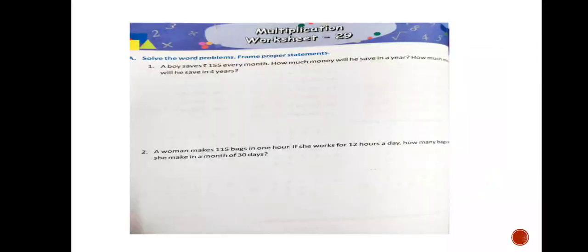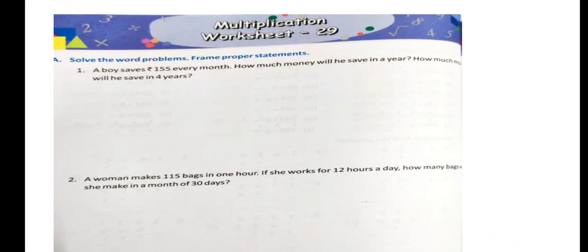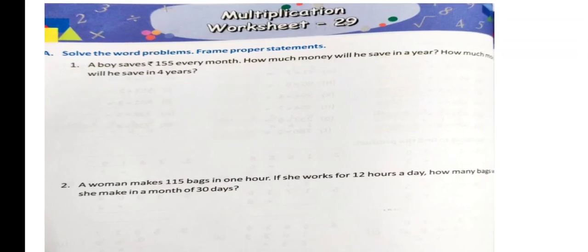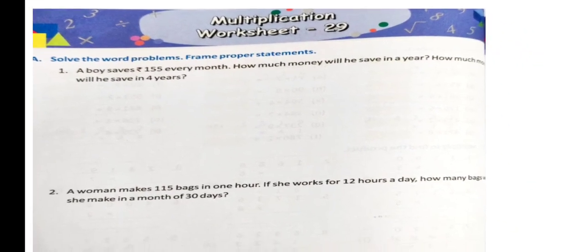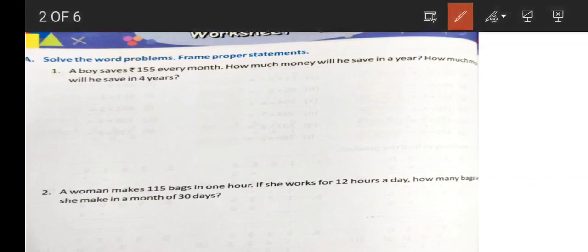Problem 29: A boy saves rupees 155 every month. How much money will he save in a year and how much money will he save in four years? One year is equal to 12 months.